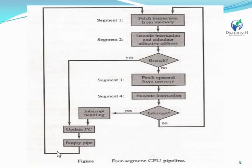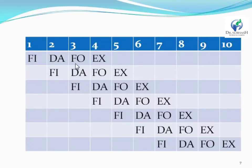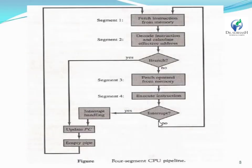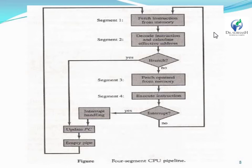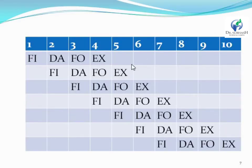If interrupt is no, then no process is stalled and it continues. If interrupt is yes, then the program is stopped. If the interrupt is no, then the process will be executed. This is the four-stage pipeline.